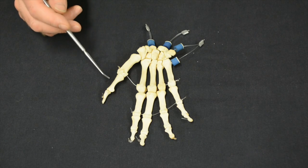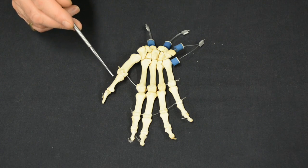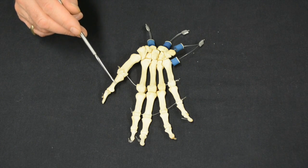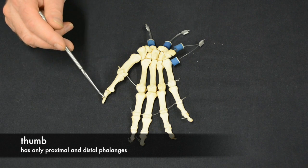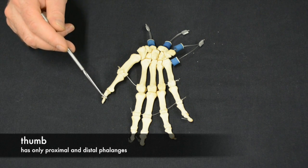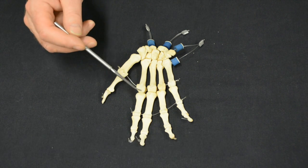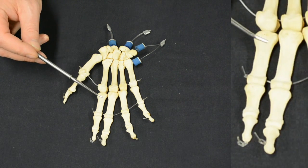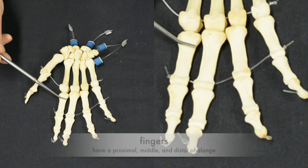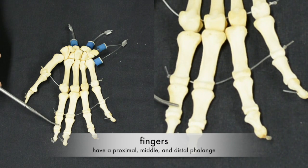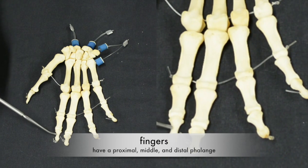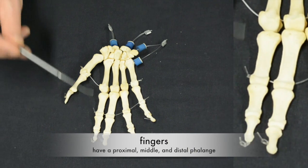The phalanges on the thumb are the proximal and the distal, and then on the fingers we have the proximal, middle, and the distal.